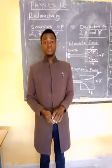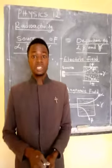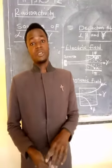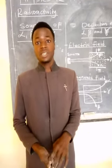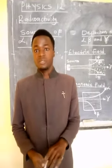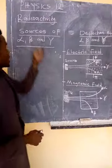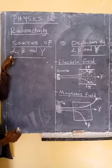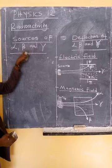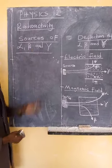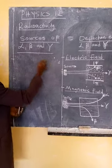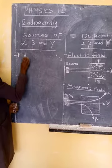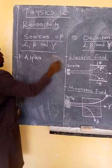In Physics 12, in the previous video we introduced radioactivity and looked at the terms involved. Today we're going to move a step further by looking into the properties of these particles involved in radioactivity. The most important thing we're going to start with is the sources of these three particles. You're supposed to know at least one example of a source for alpha, beta, and gamma — it's very important because in an exam you'll be asked to cite a source for each.